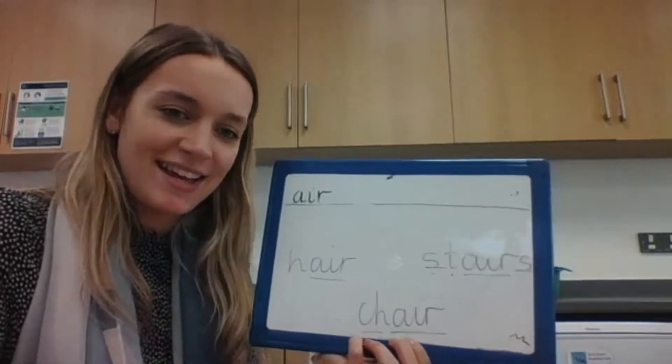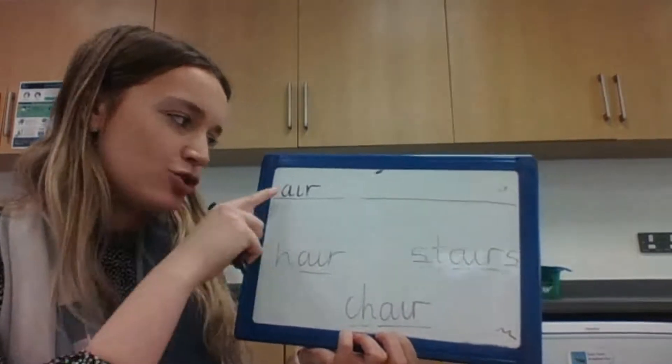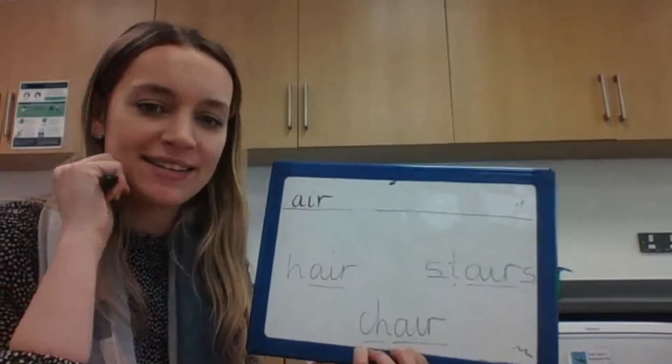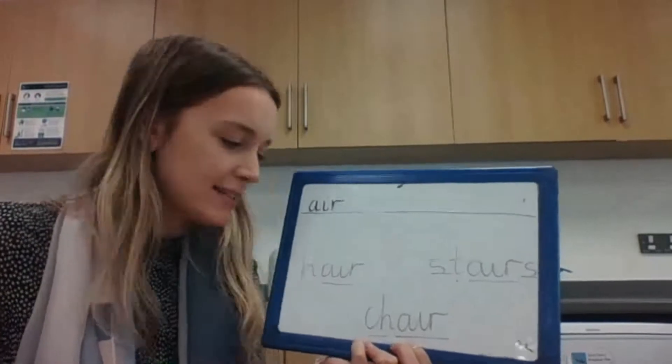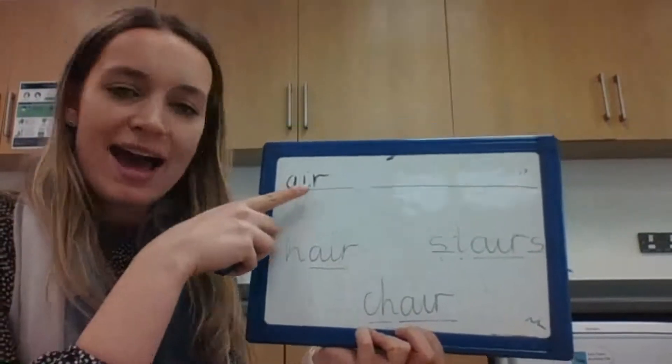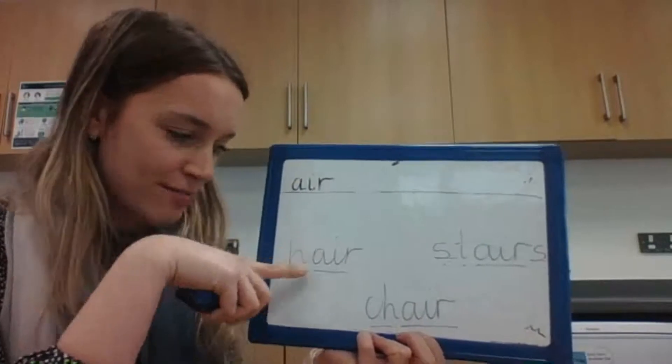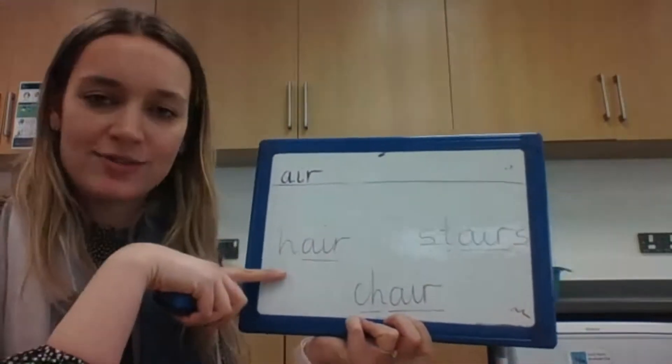Hi boys and girls, today you have been learning the sound 'air' and it's a trigraph because it's got three letters that make one sound. Now before we have a go at writing it, let's practice reading it. So we're looking for a, i, and r to make that 'air' sound. Let's start with this word.